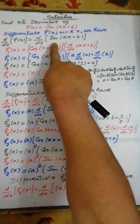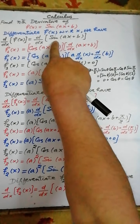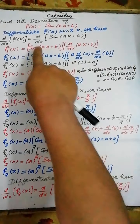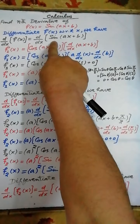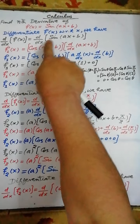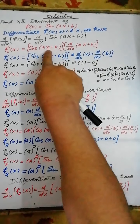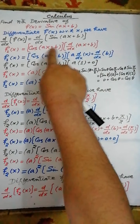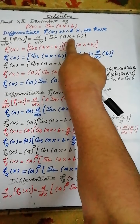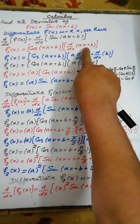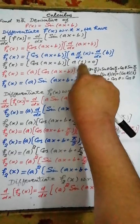The power of sin(ax + b) is equal to 1. Therefore, the derivative of sin(ax + b) is equal to cos of this quantity, which is ax + b, multiplied by the derivative of this quantity ax + b.